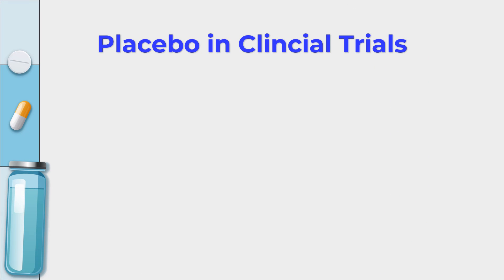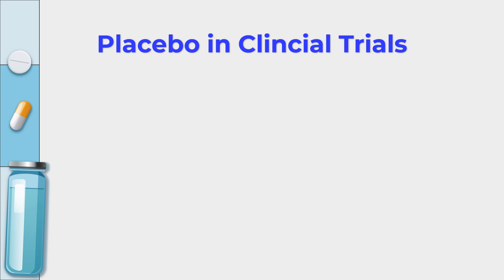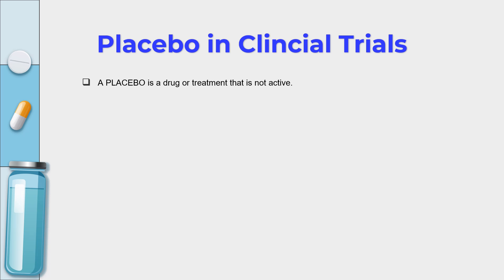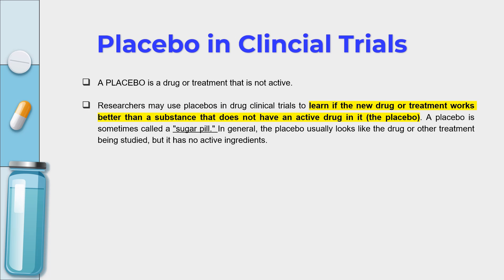When it comes to placebo, we have all heard that placebo is used in a particular clinical trial, or that placebo can have a significant effect on health outcomes. But what exactly does placebo mean? Placebo is a drug or treatment that is not active. Researchers use this method to learn if a new drug or treatment works better than a substance that does not have an active ingredient — meaning there will be two pills: one with the active ingredient, the molecule, the chemical formula, and the other with just non-active substances.